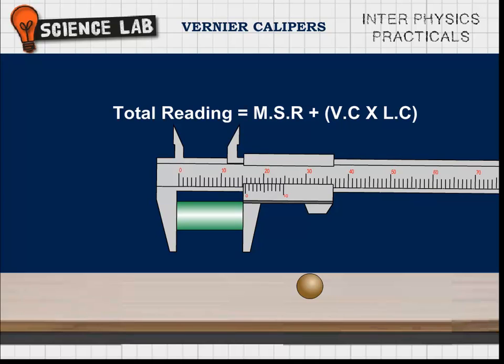The vernier coincidence N is multiplied by the least count to get the fraction of a main scale division. This is added to the MSR to get the correct or total reading on length of the cylinder.